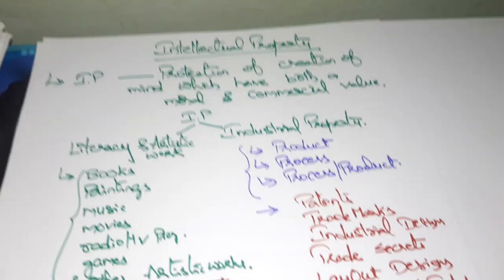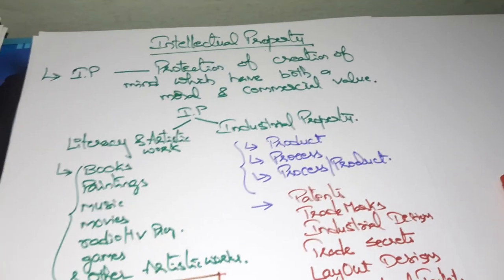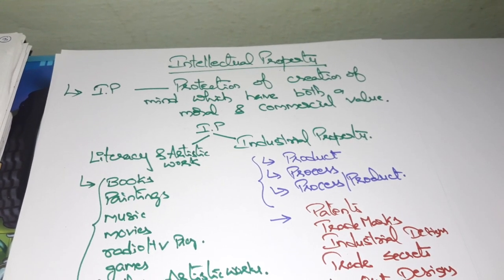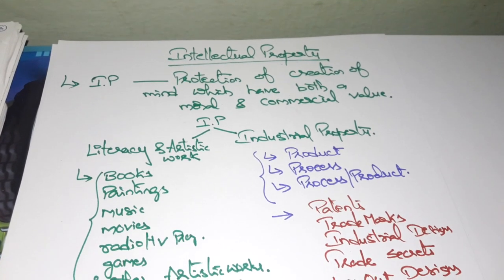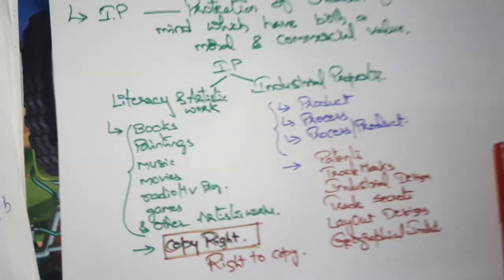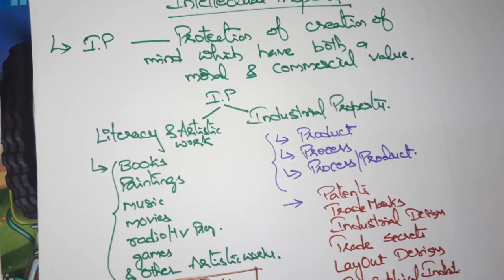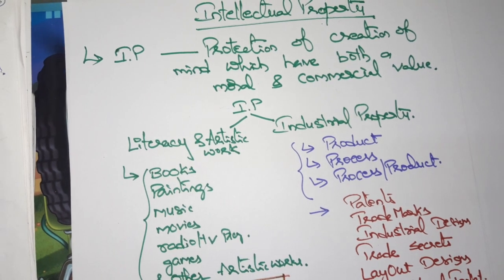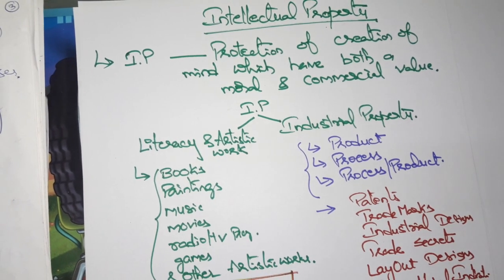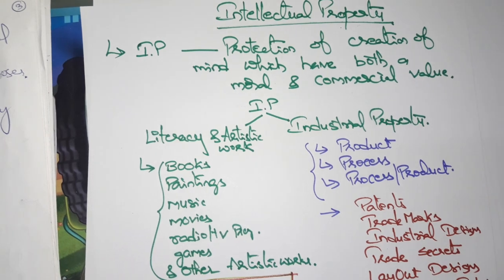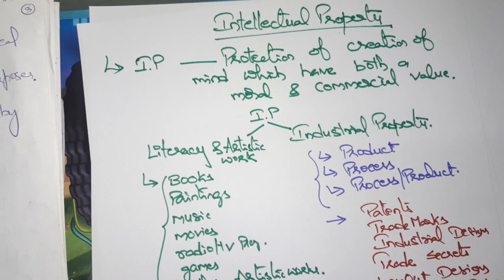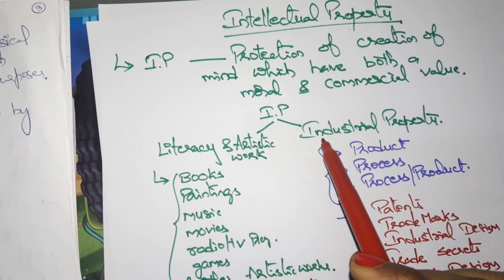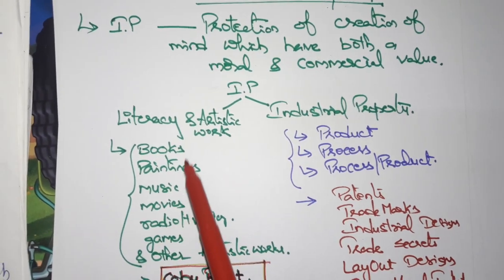Now we will see the introduction of intellectual property. Intellectual property is a protection of creation of mind which has both moral and commercial value, which means that if you created any knowledge or product related to it, it is going to give security for your knowledge or product. Intellectual property comprises two different forms.